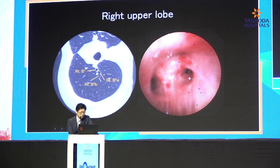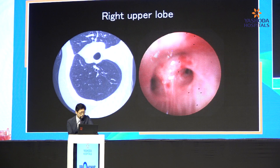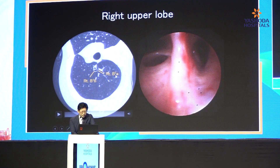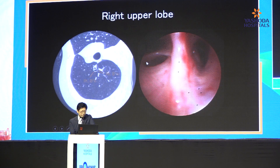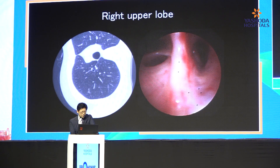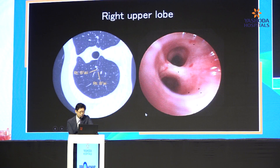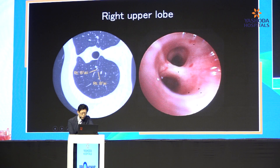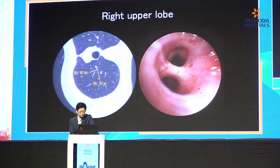And inside B2, the branch is A, B, from right to left. Similarly, B1 is divided into A and B — right side is A, left side is B. And next, B1A is divided into B1 small one and small two. Here you can see small one and small two. It's different from the other lobe bronchus.